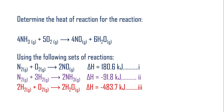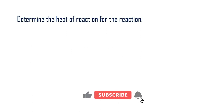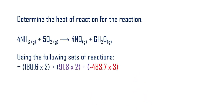Write everything on paper and cancel out common terms — you will see that it balances up to give the target reaction. The key thing now is knowing how to add up all the enthalpies: it is 2 times 180.6, plus 2 times 91.8, plus 3 times minus 483.7. That gives you the heat of the reaction.